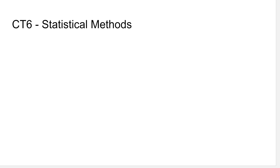With subject CT6, there were a lot more casualties. For instance, one of my favorite topics — decision and game theory — has just been removed from the actuarial syllabus entirely. I couldn't find it in any of the other exams. If you've located it in another subject please let me know. Game theory was brilliant; the whole idea is to help actuaries make better financial decisions, and we've just thrown that away.